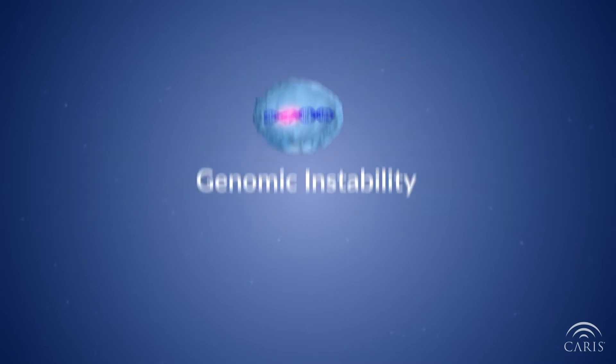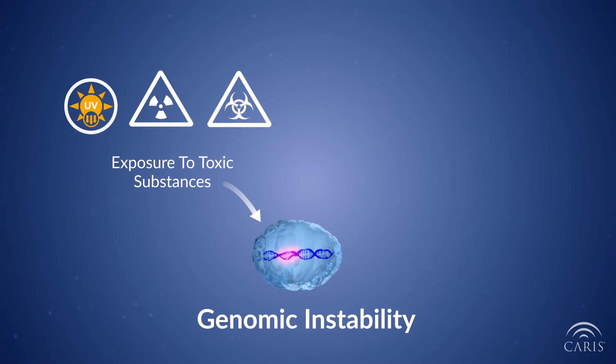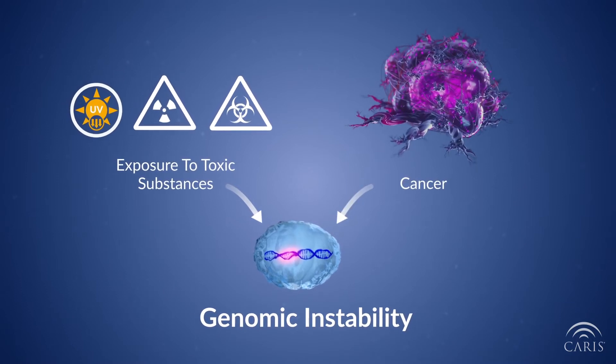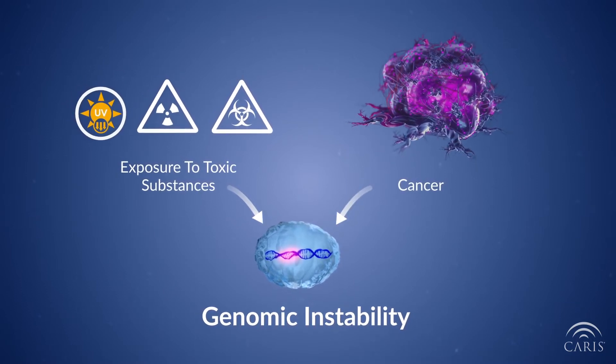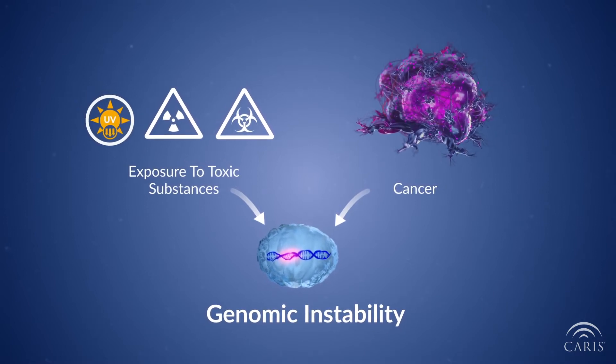Genomic instability can be due to exposure to toxic substances that induce DNA damage or can result from diseases like cancer that disrupt the normal cell division and DNA repair processes, allowing cells to grow out of control.